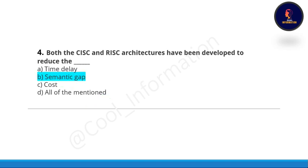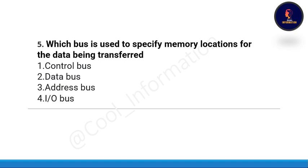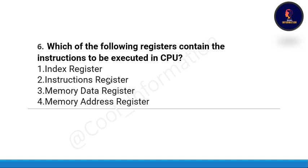Question number five: which bus is used to specify memory locations for data beam transport? Option A: control bus. Option B: data bus. Option C: address bus. Option D: input/output bus. The correct option is option C, which is address bus.